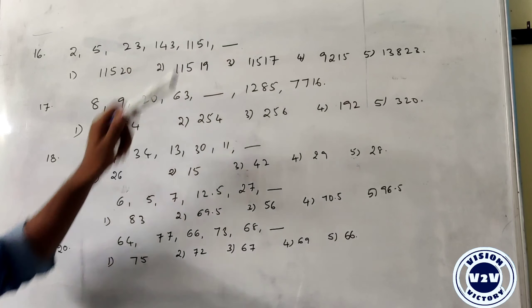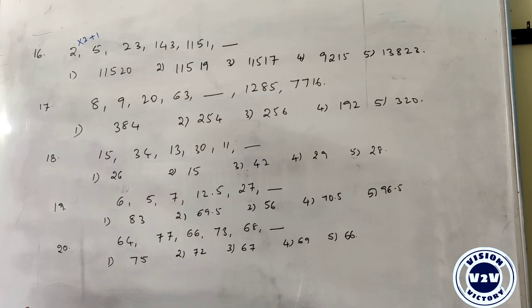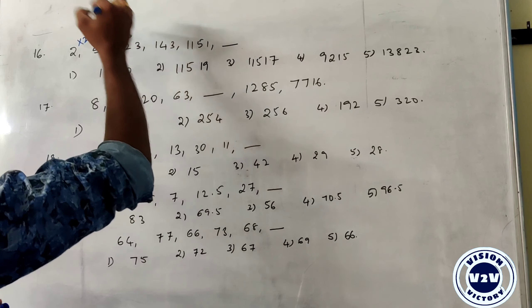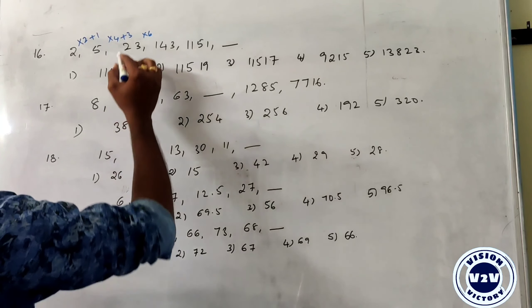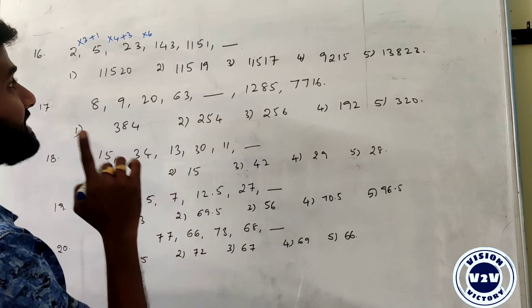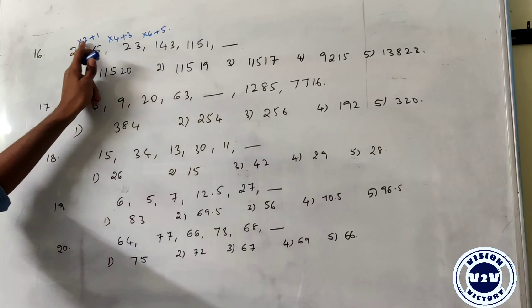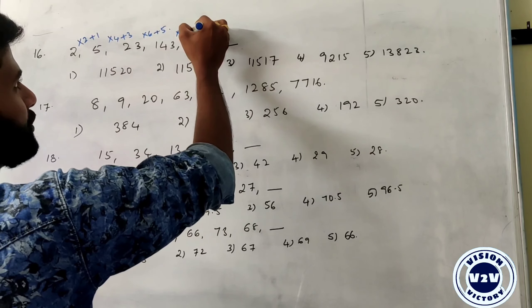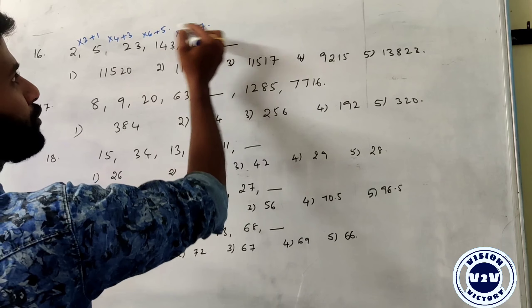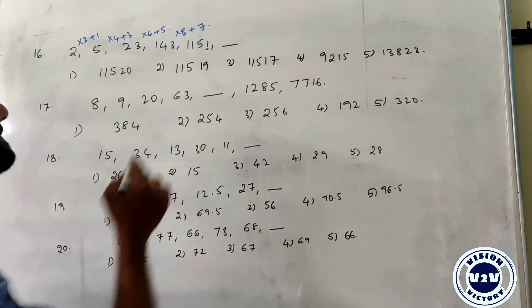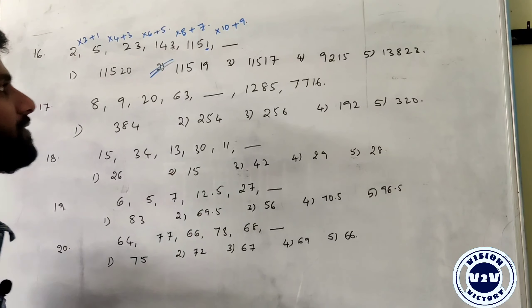Next: 2, 5, 23, 143, 1151. Checking: 5 times 4 plus 3 = 23, 23 times 6 plus 5 = 143, 143 times 8 plus 7 = 1151. The multipliers are 4, 6, 8, 10 (even numbers) and additions are 3, 5, 7, 9 (odd numbers). So next is 1151 times 10 plus 9 = 11519. The answer is 11519.